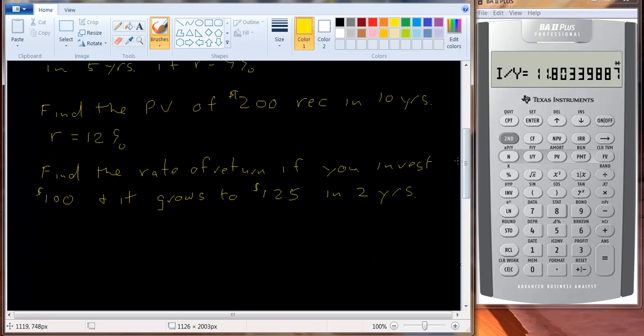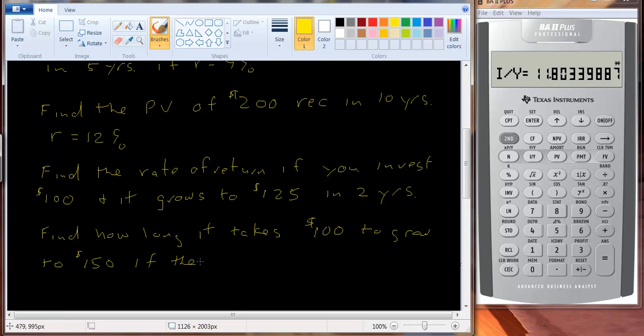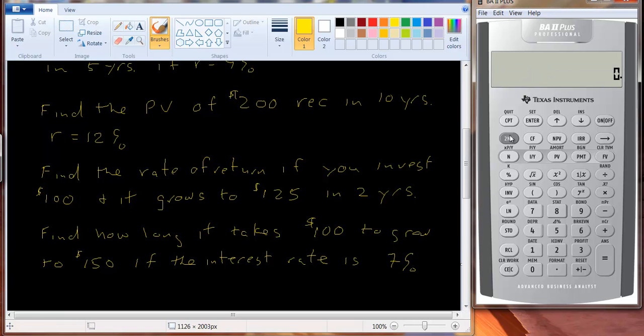Okay, let's do one more. If you want to compute the number of periods, so let's say find how long it takes $100 to grow to $150 if the interest rate is 7 percent. Alright, so let's clear our workspace. Second, clear TVM.